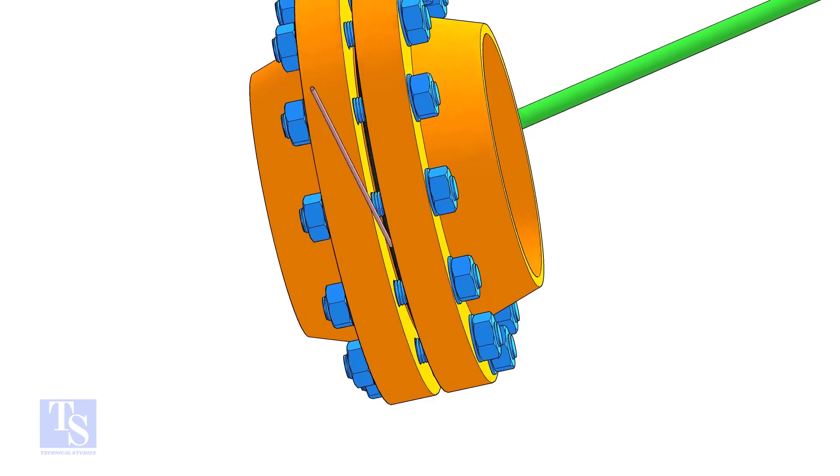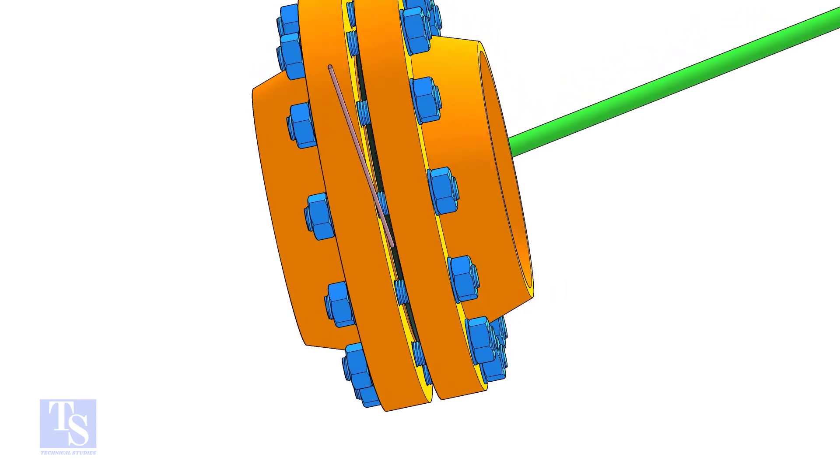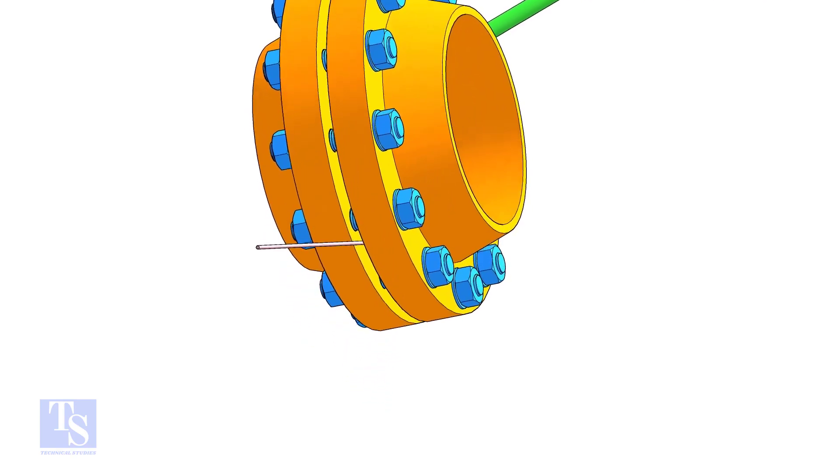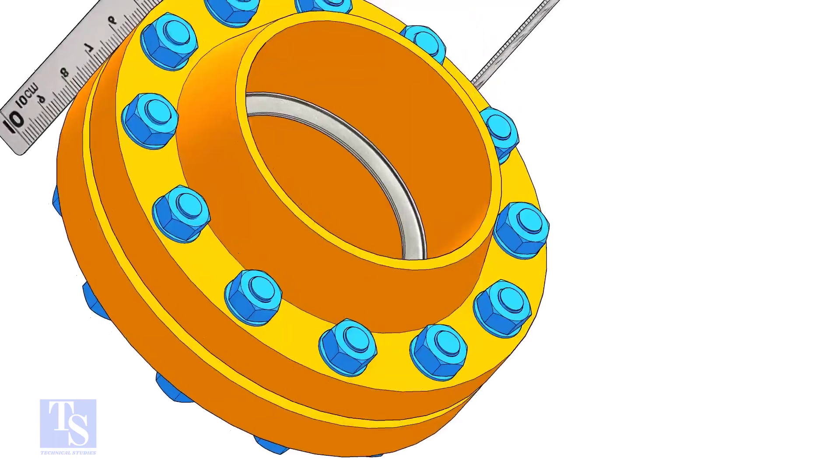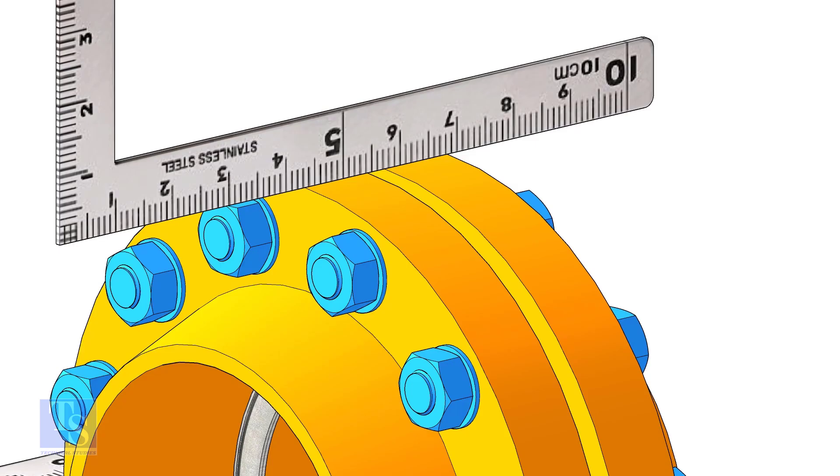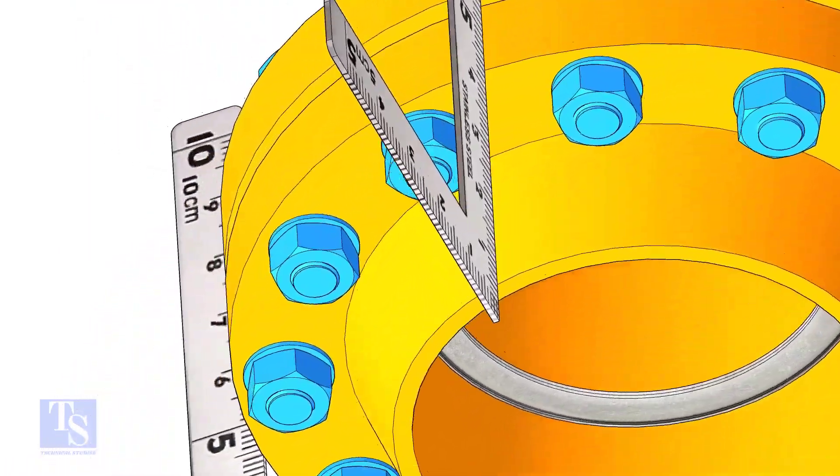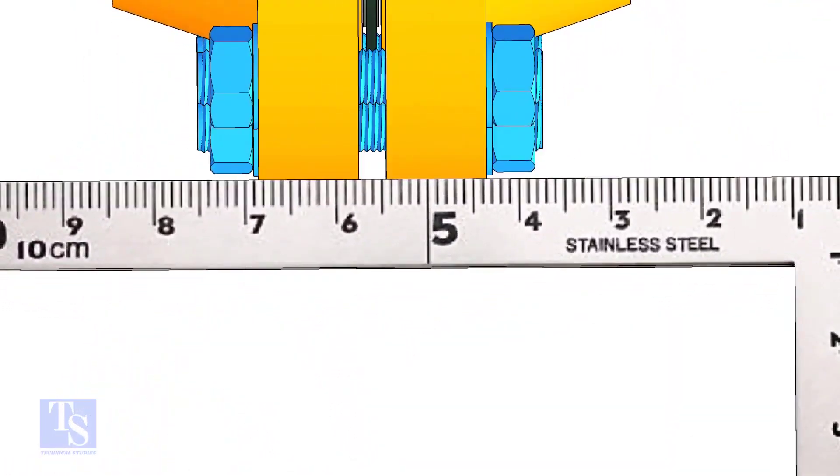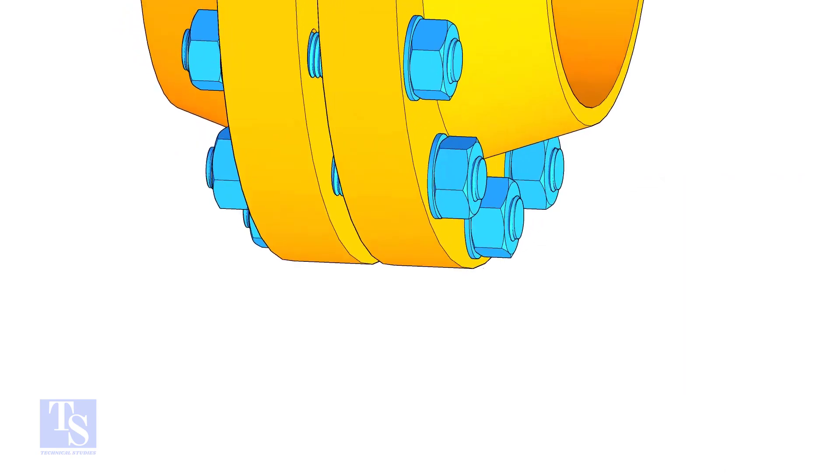Now, tighten the bolts only enough to hold the gasket in its correct location. Check the flange overlap minimum at four quarters. In case there is an overlap, distribute equally to all sides.